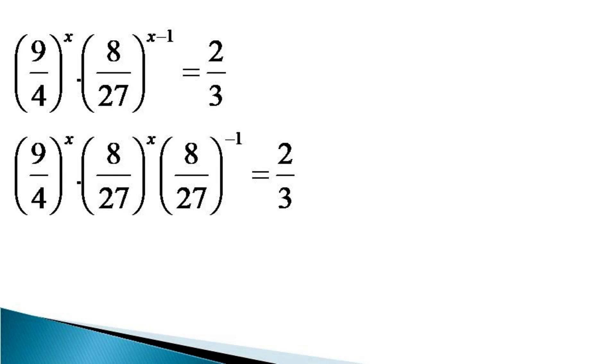The first two terms on the left hand side have the same indices, so they can be written in combined form like (9×8)/(4×27) raised to the power x, and (8/27)^(-1) remains as such, and the whole equals 2/3.